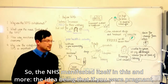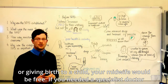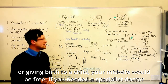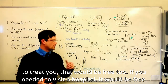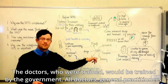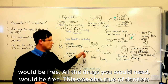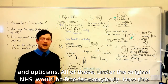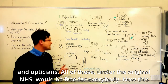The NHS manifested itself in many ways. If you were pregnant or giving birth, your midwife would be free. If you needed a specialist doctor, that would be free too. If you needed to visit a hospital, it would be free. Doctors would be trained by the government. All general practitioners would be free. All the drugs you needed would be free. This was also true of dentists and opticians. All of these under the original NHS would be free for everybody.